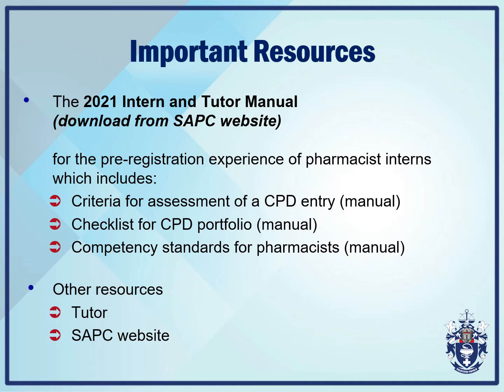In the manual, you will come across the criteria for assessment of a CPD entry. It is important that you understand the grid, as it gives you insight into how we as the assessors or moderators mark your CPDs. This is found on page 33 of your manual. The CPD portfolio checklist is on page 38, and it gives you further guidance on what is expected when you are fulfilling your CPDs. Lastly, the competency standards for pharmacists are available on page 62 of your manual.